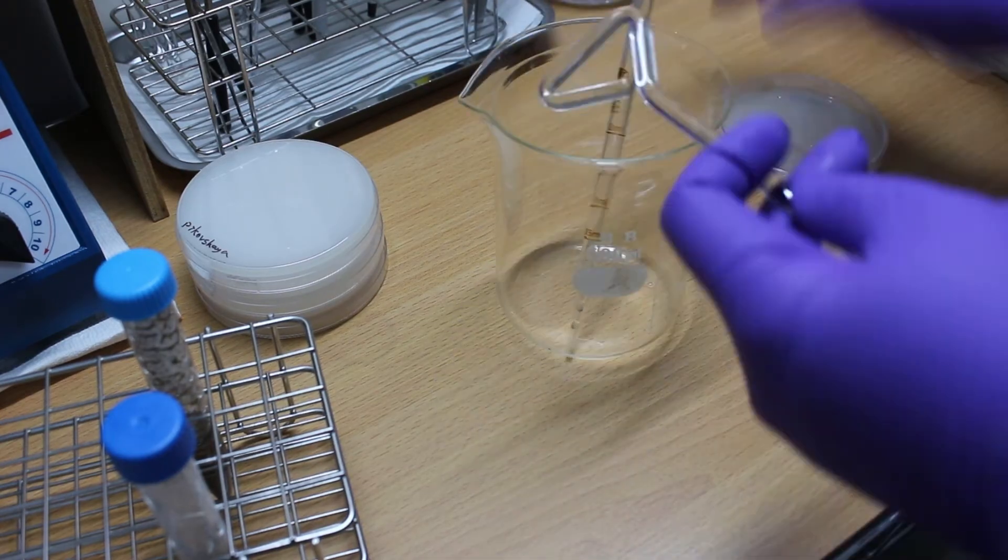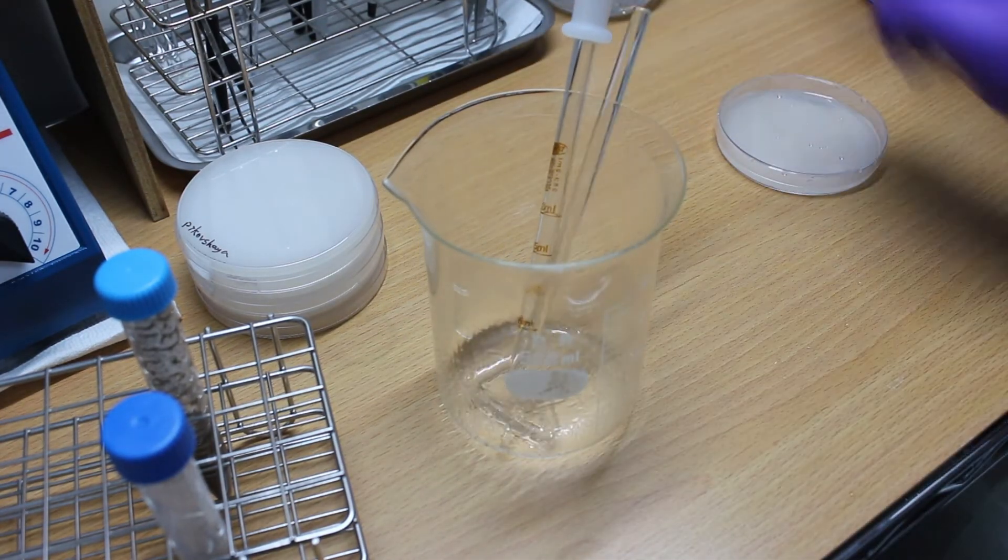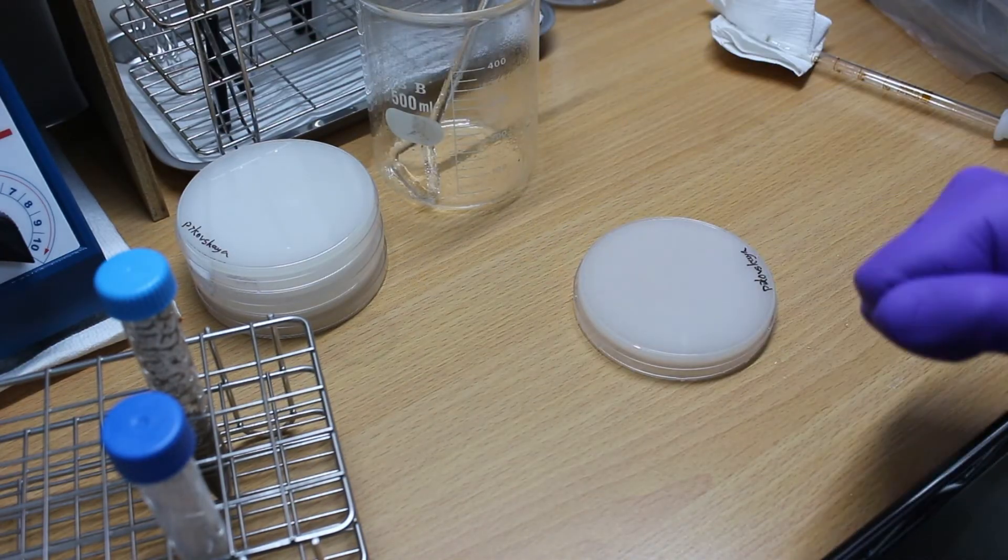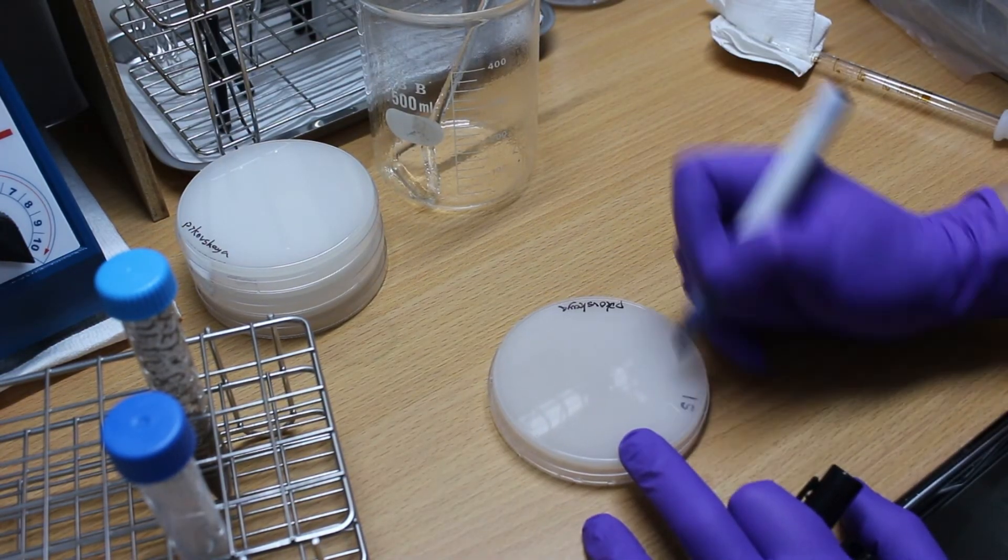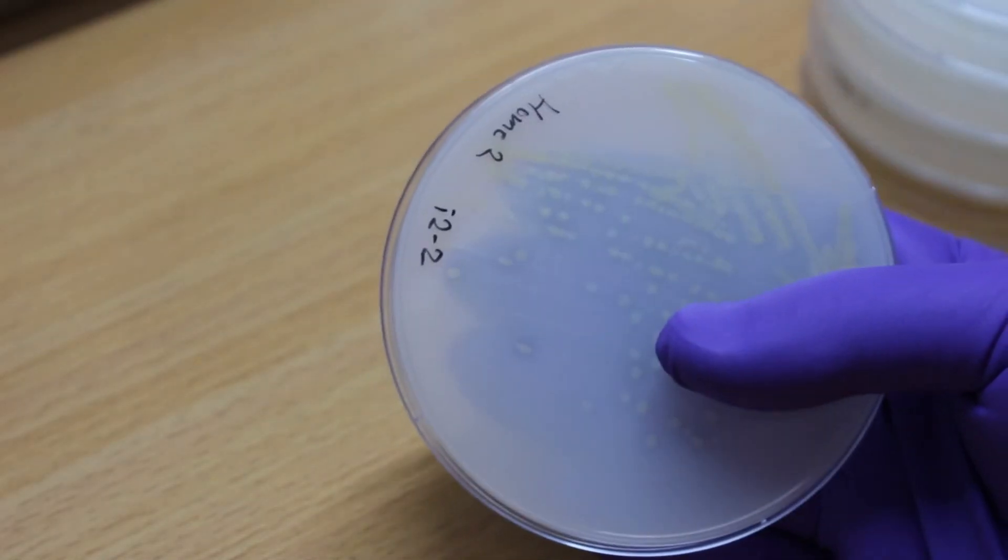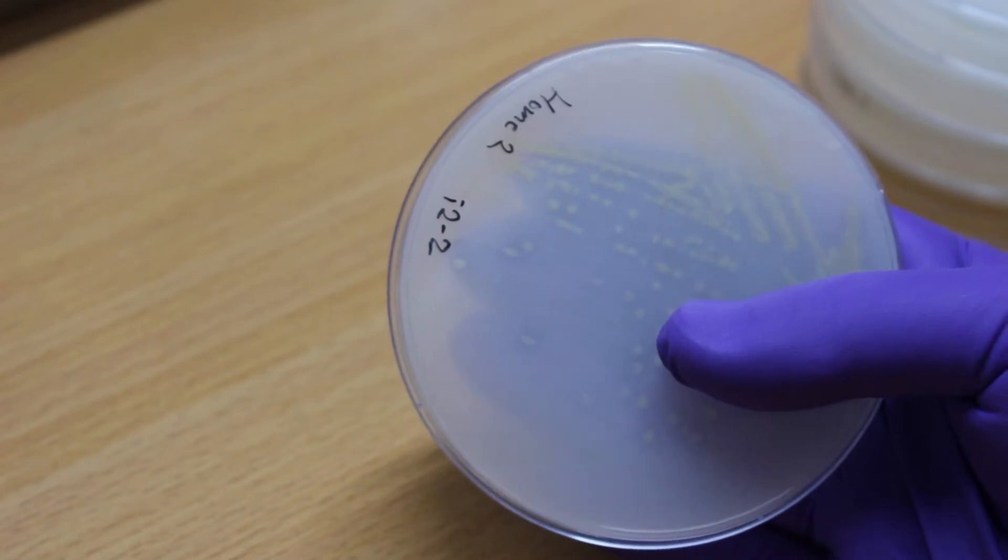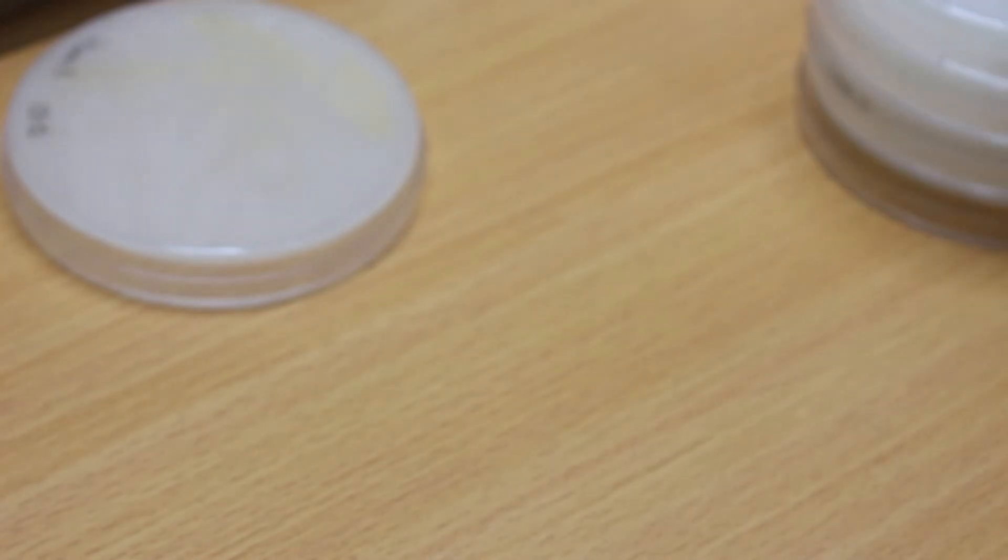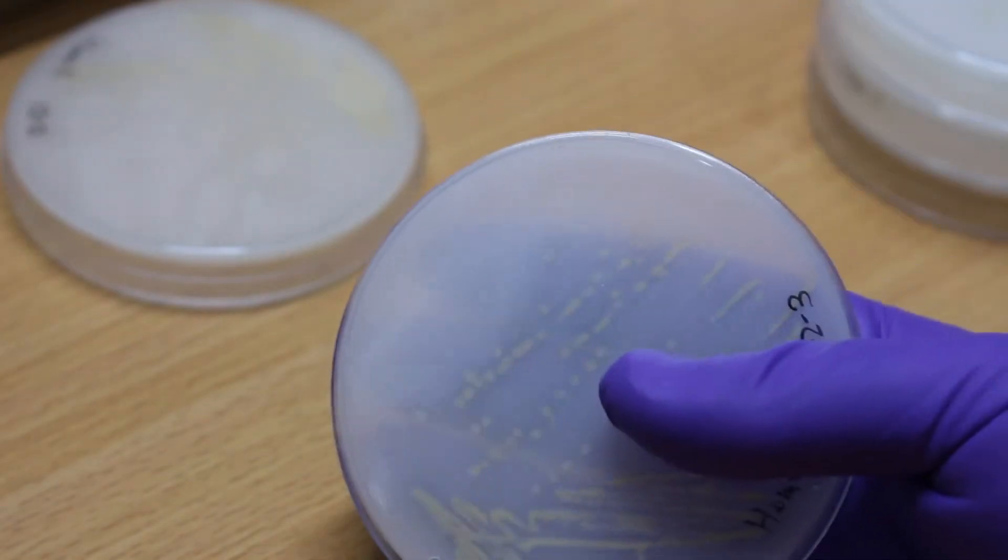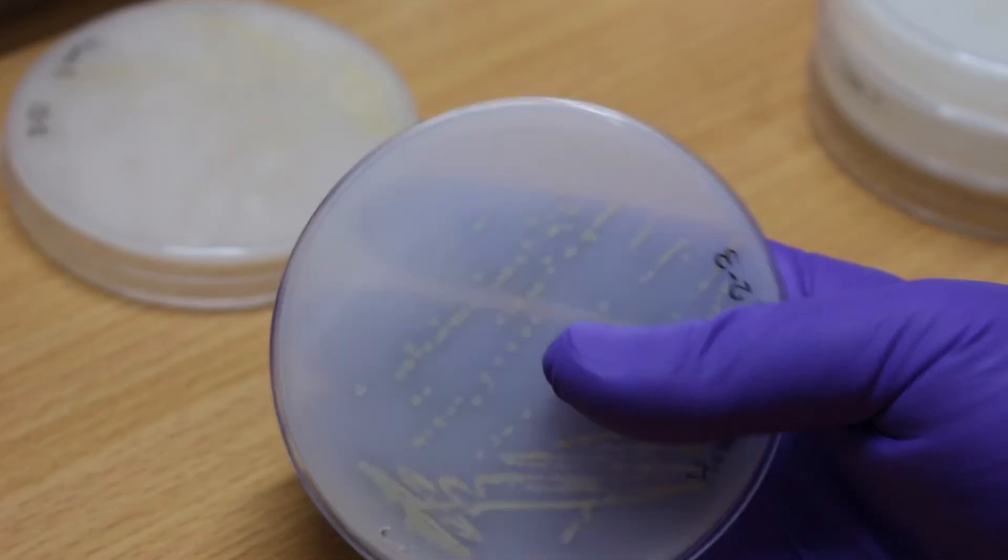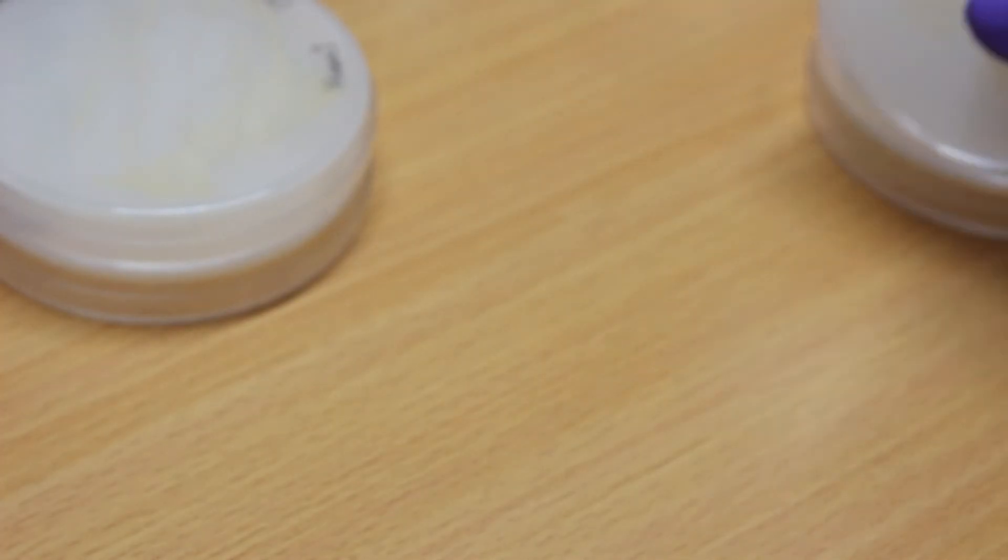During the filming process, I used about 10 agar plates for the initial sampling from the soil and found 15 suspect colonies. After screening, I was able to isolate 6 PSB bacteria. This shows that the quantity of PSB in soil, although it's not very high, is not very rare either. With correct operation, the probability of isolating PSB is quite high.